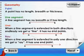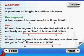Geometry. Point: A point has no length, breadth, or thickness. Line segment: A line segment has no breadth, but it has length.